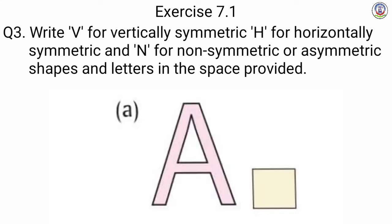First of all we have A. Alphabet A is vertically line of symmetric, so हम लोग को जो square box दिया गया है उसमें हम लोग लिखेंगे V.